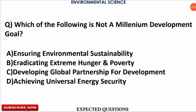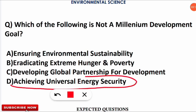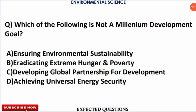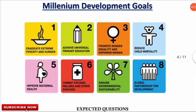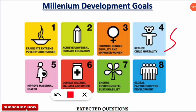The next question is: which of the following is NOT a Millennium Development Goal? The correct option is 'achieving universal energy security,' as all other options are part of the MDGs. There are 8 Millennium Development Goals in total. Be careful not to confuse MDGs with SDGs — Sustainable Development Goals are 17 in number.